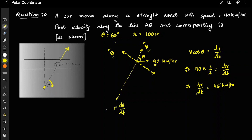This component is in the negative tangential direction, so r·dθ/dt equals minus v·sin(θ). I have taken the minus sign because it is in the negative direction relative to the assumed tangential direction. From here, dθ/dt — which is omega — equals minus v·sin(θ) divided by r.